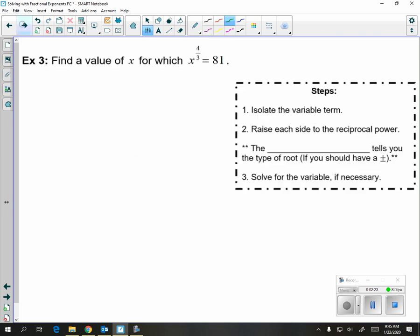So let's sum it up with steps. What you're always going to want to do to solve for x is isolate the variable term. In this case, you have the variable by itself already. To get rid of the exponent, you're going to raise both sides to the reciprocal power, which in this case is 3 fourths. Now if you do that and put it in your calculator, your calculator is going to tell you 27.